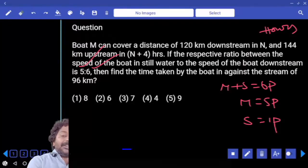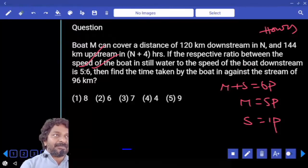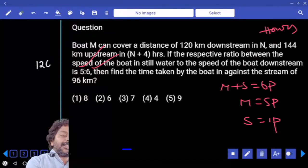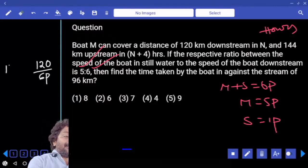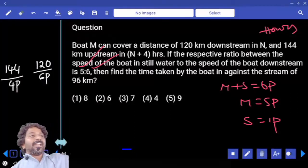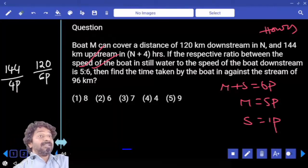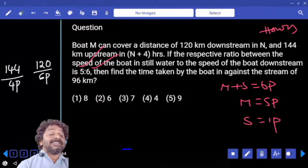Now 120 kilometers covered downstream. Then time to cover 120 kilometers downstream is 120 by 6 parts only. Next, 144 kilometers covered upstream, right? Upstream speed is equal to 4 parts. Time taken upstream is N plus 4. Time taken downstream is N. Then difference in time is?